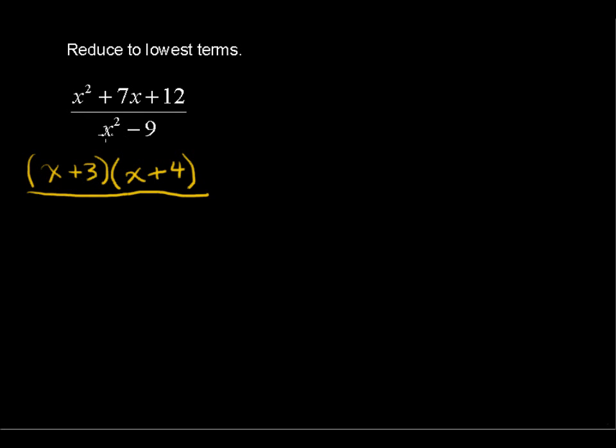In the denominator, this difference of squares becomes x plus 3 multiplied by x minus 3.